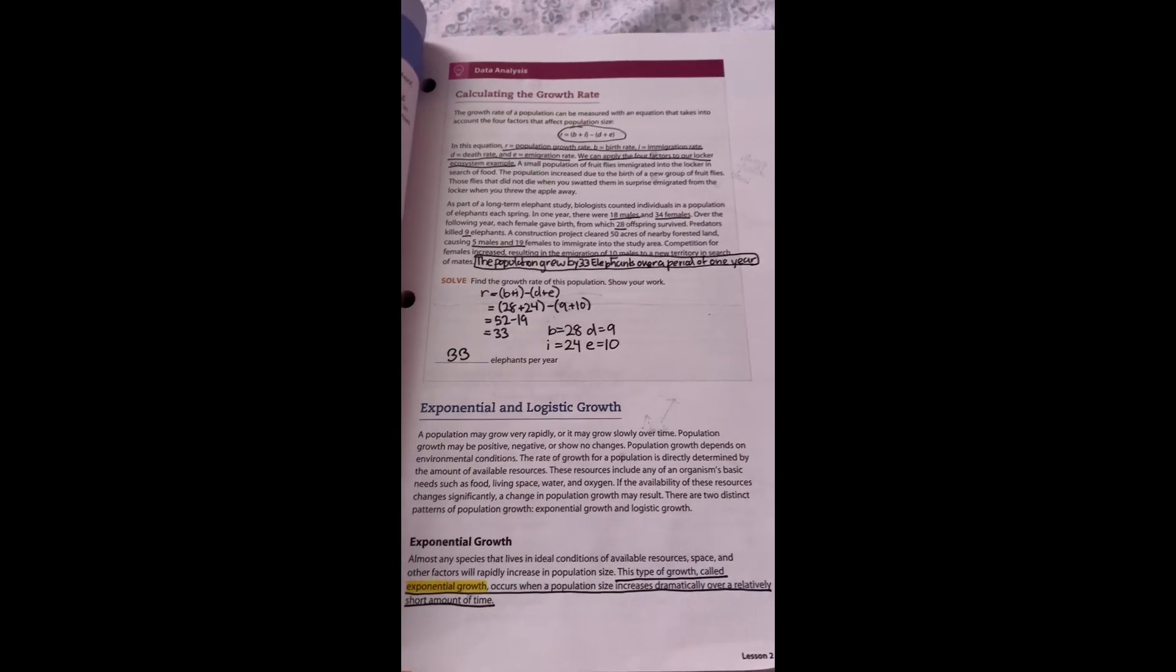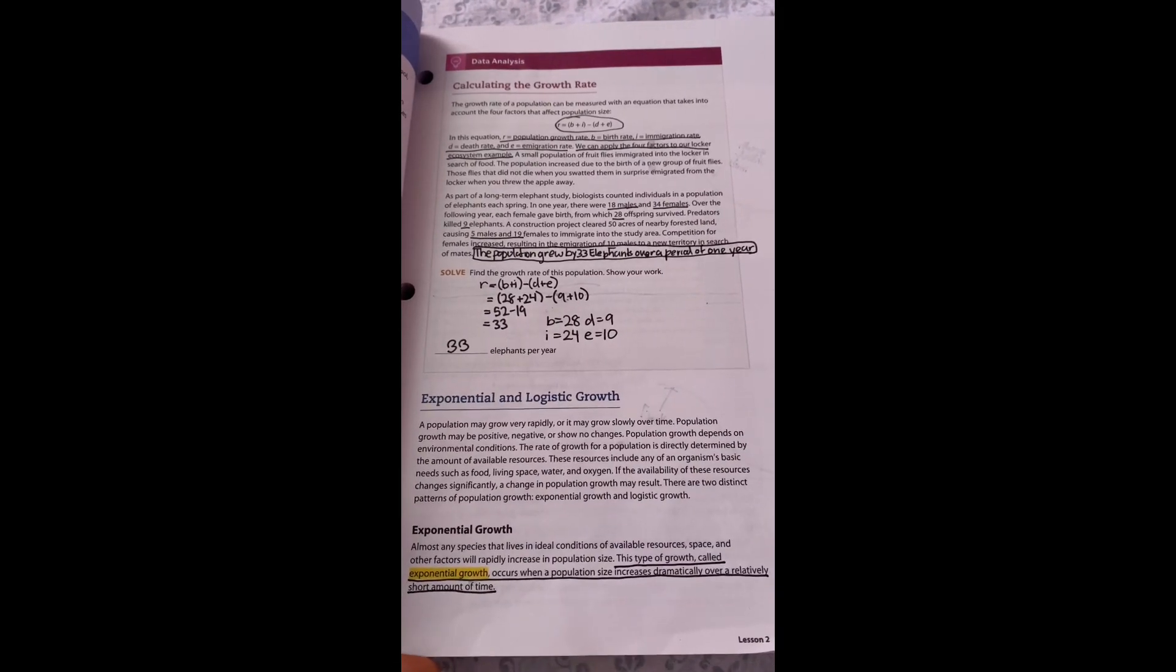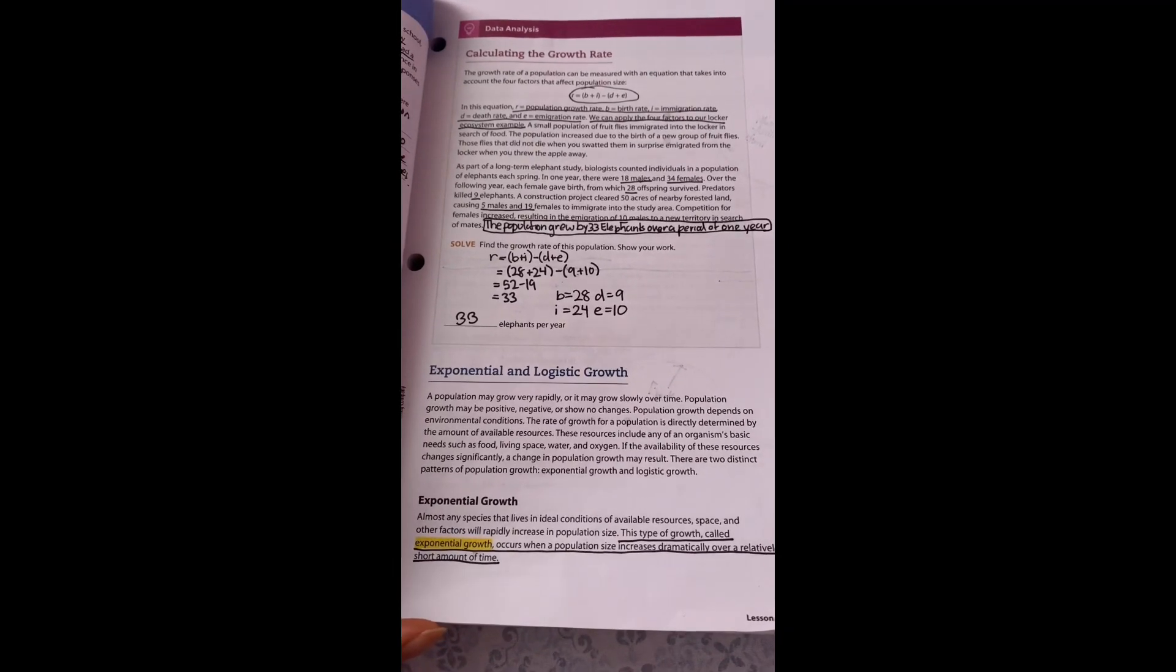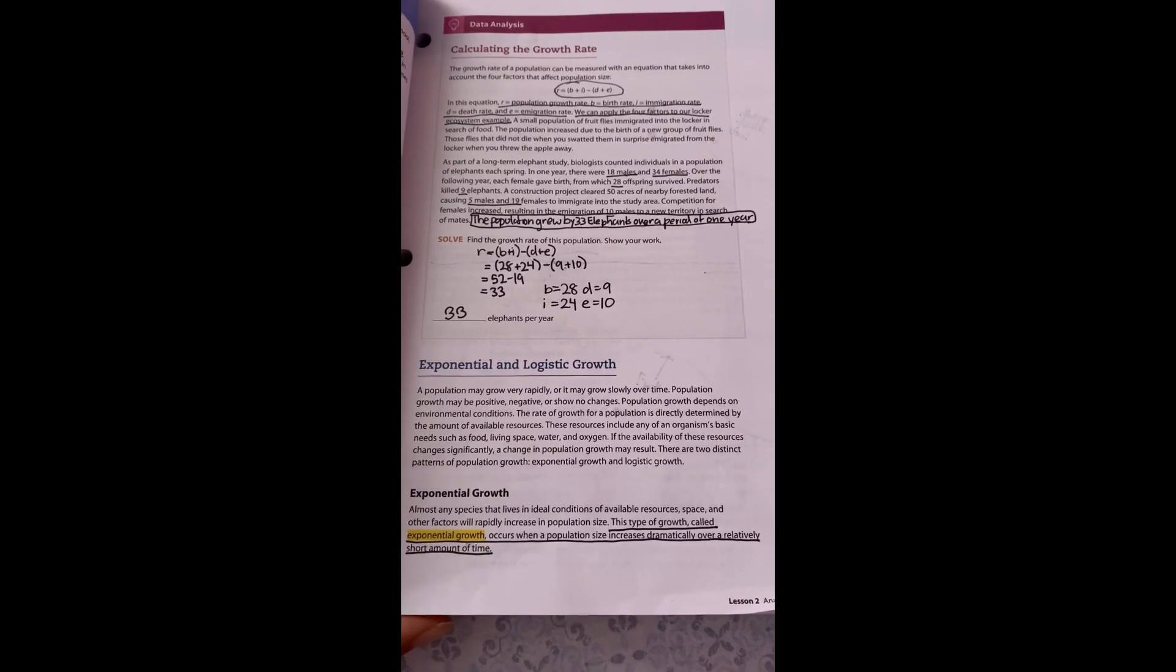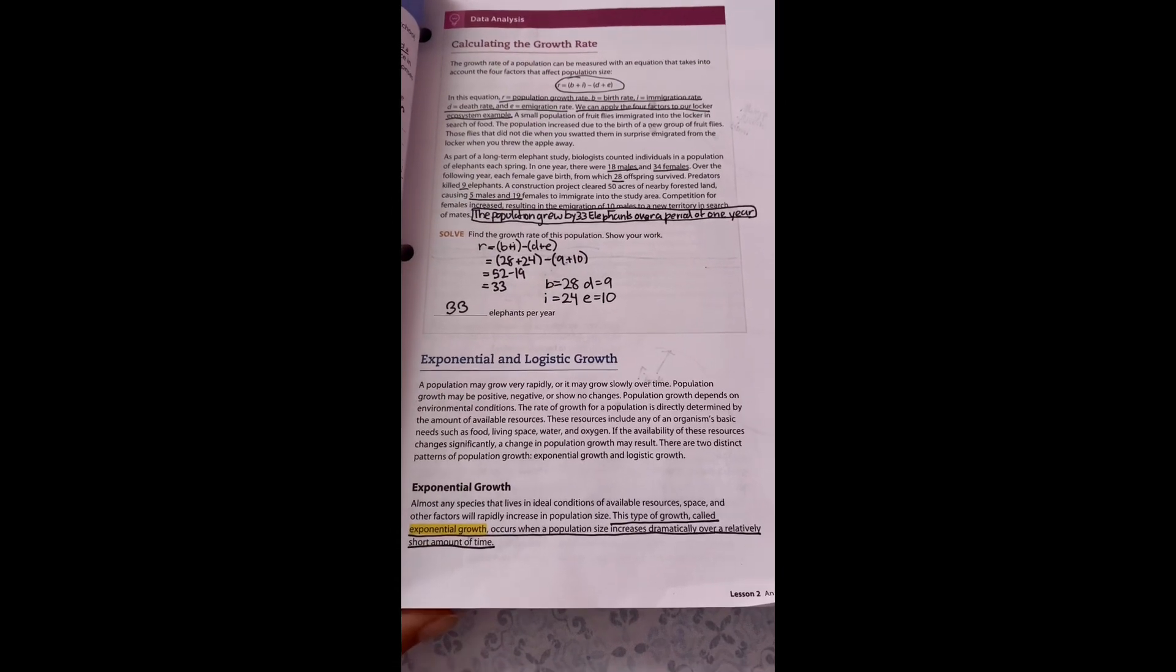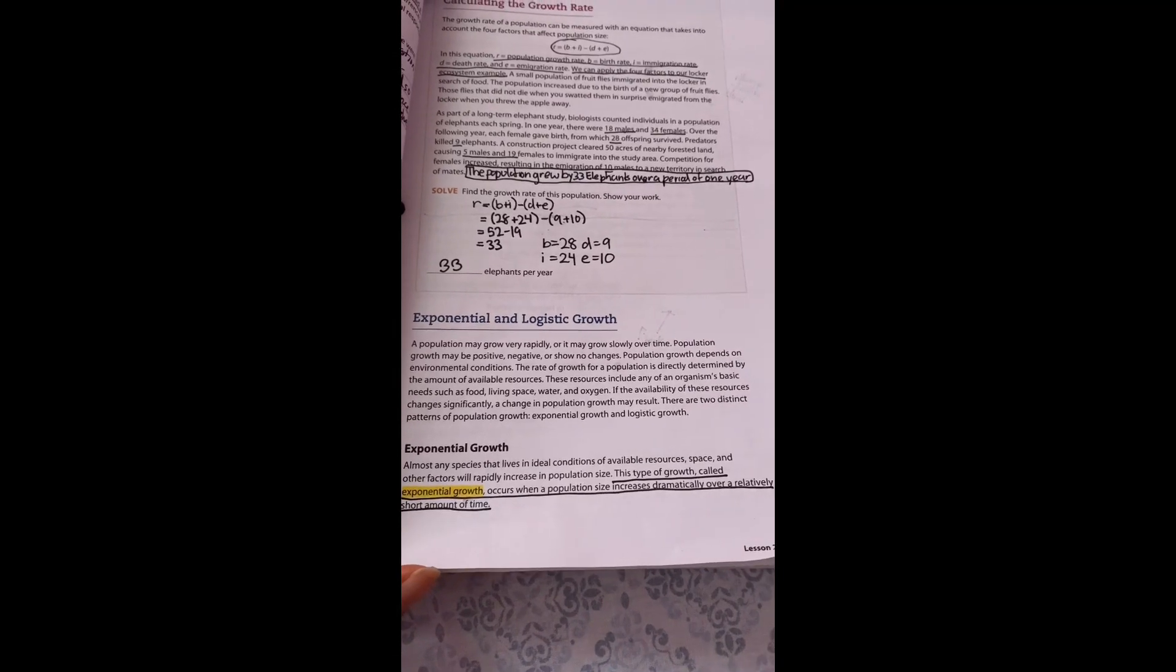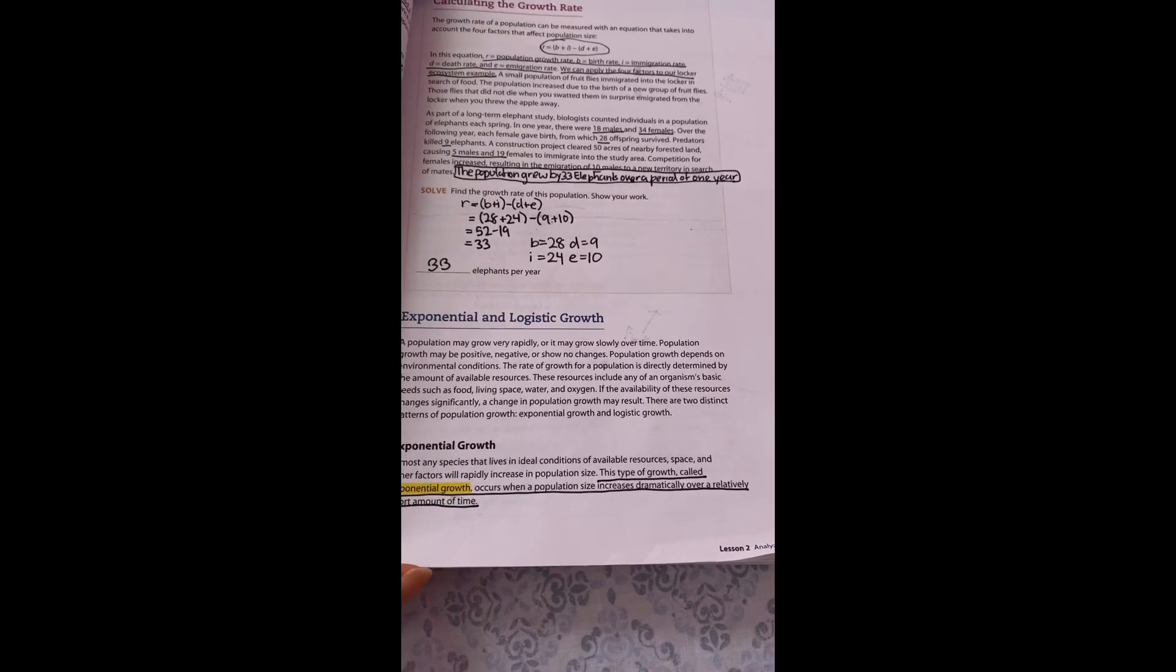There are two distinct patterns of population growth: exponential growth and logistic growth. Any species in ideal conditions of available resources will rapidly increase in population size. This type of growth, called exponential growth, occurs when a population size increases dramatically over a relatively short period of time.